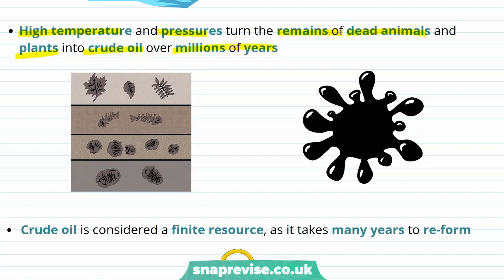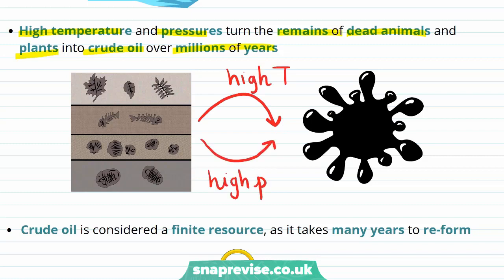The fossils that make up crude oil are ancient and comprised mainly of plankton. These are exposed to high temperatures and pressures and broken down over millions of years in order to form the black oil that we know as crude oil.